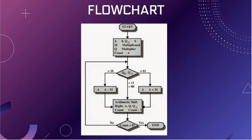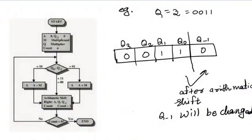If the value of Q0 and Q-1 is 0-1, we add the multiplicand to the accumulator, then perform an arithmetic right shift and decrement the count by 1. If the count equals 0, we end the program; otherwise we repeat the process. To understand Q-1, consider 3 as a multiplier — in binary it is represented as 0011. The bits of 3 are represented as Q0, Q1, Q2, and Q3. Q-1 is declared before Q0 and is initially taken as 0; after an arithmetic shift, Q-1 will change accordingly.